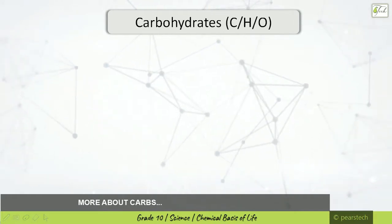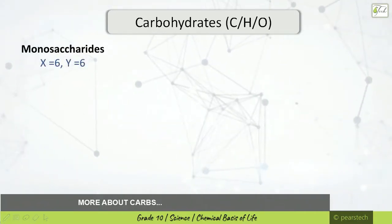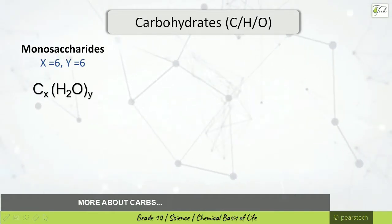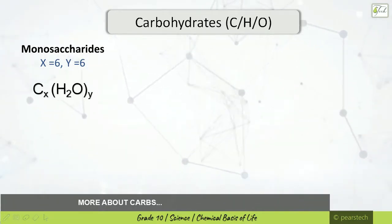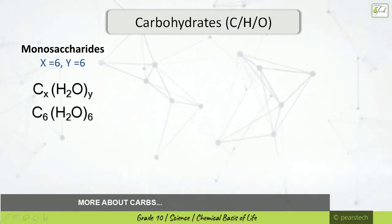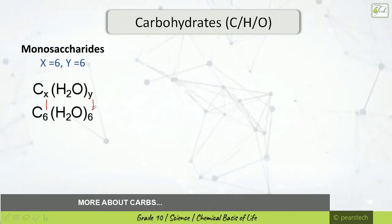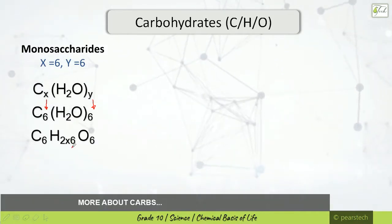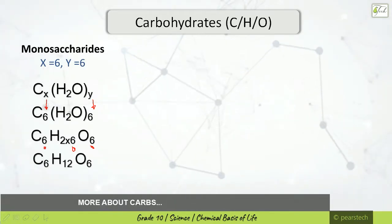There are divisions of carbohydrates, and as per the divisions the molecular formula also changes. There are three types. The first is monosaccharides. For monosaccharides, x equals y, both equal to 6. Applying that to the formula Cx(H2O)y, we get C6H12O6.